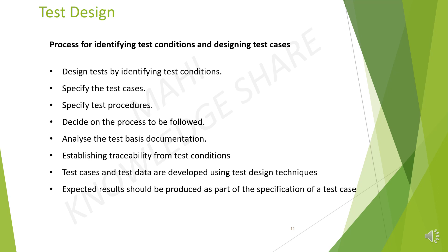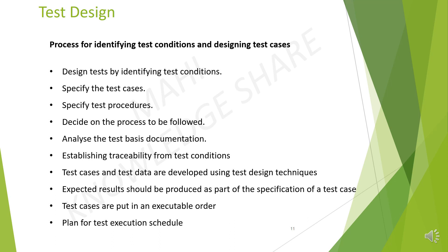Test cases are put in an executable order — this is the test procedure specification. The test procedure specifies the sequences of actions for the execution of a test. Then, plan for a test execution schedule, which is the last step in this process. Various test procedures are sequentially formed into a test execution schedule that defines the order in which the various test procedures are executed, when they are to be carried out and by whom. The test execution schedule takes into account factors such as regression test, prioritization, technical, and logical dependencies.